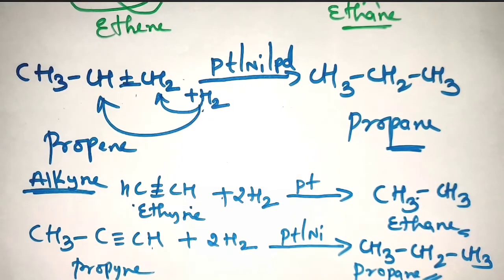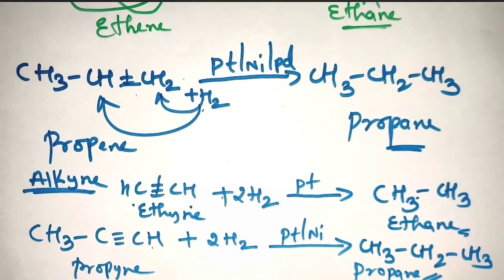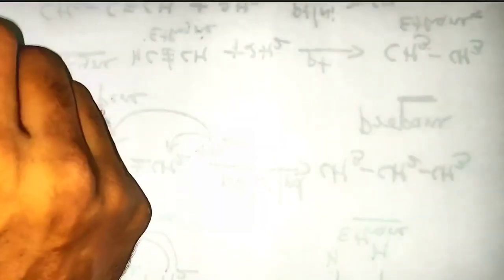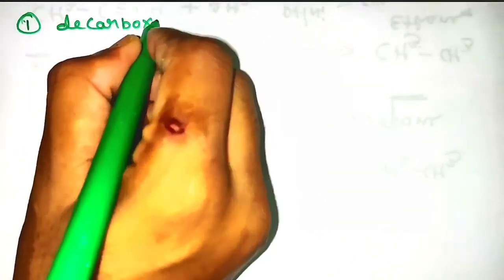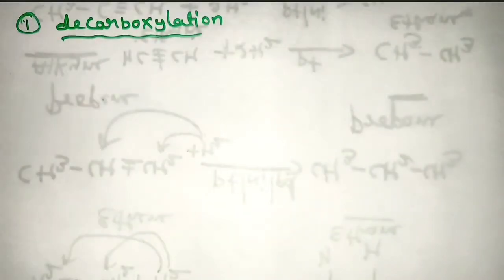This is the preparation from unsaturated hydrocarbons. Based on this you can practice many more examples. The last preparation is from carboxylic acids. By taking carboxylic acid, you can prepare alkanes in 2 different ways. The first method is called decarboxylation.